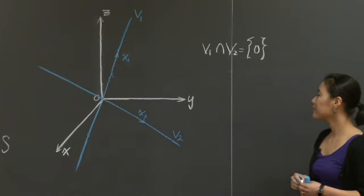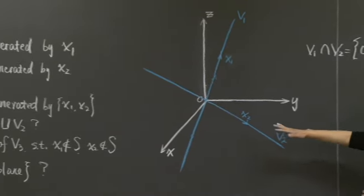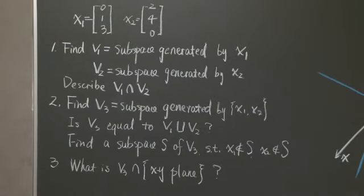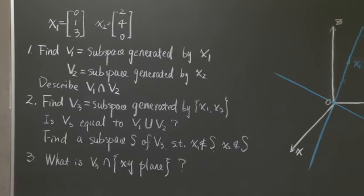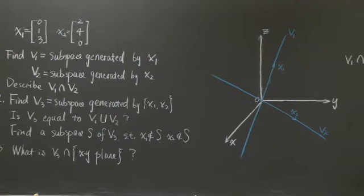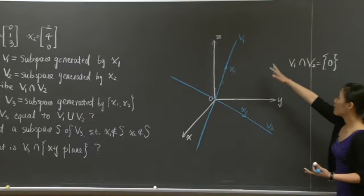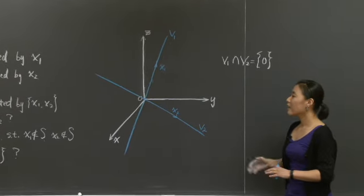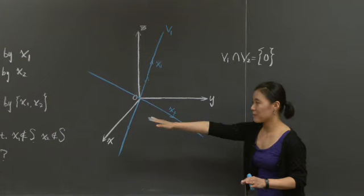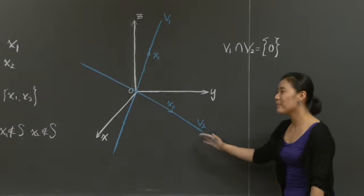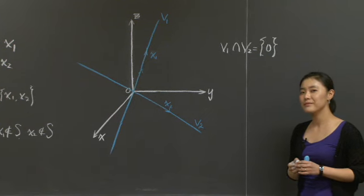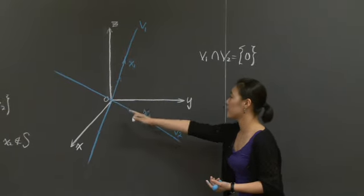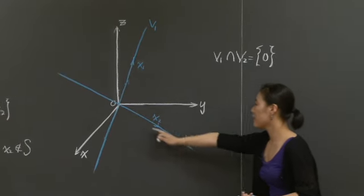That completes the first question. Let's look at the second one. I want to put x1 and x2 together and look at the subspace generated by x1 and x2. I'd also like you to say something about the relation between v1 union v2 and the subspace generated by x1 and x2. Let's try to answer: is there a chance that v1 union v2 equals v3?